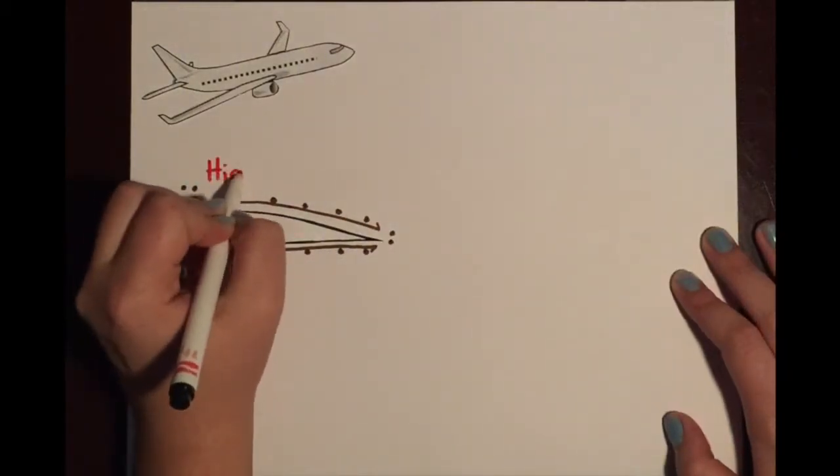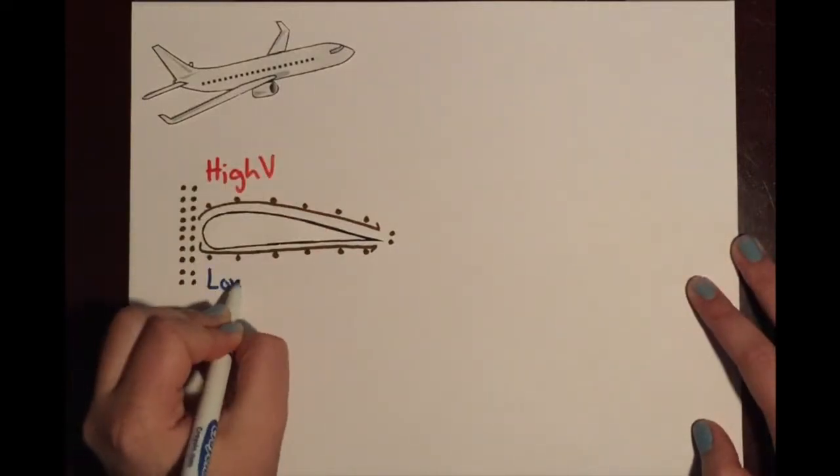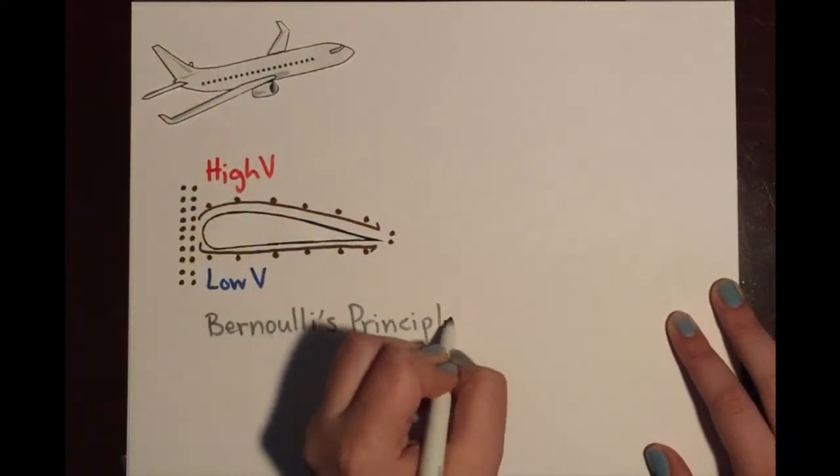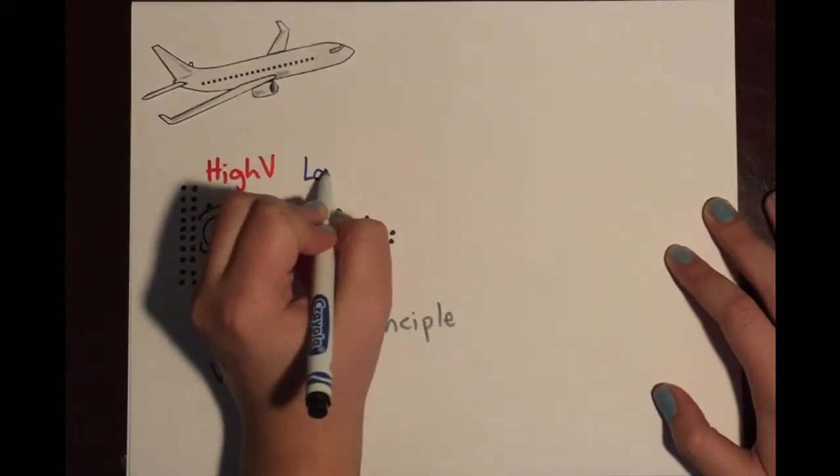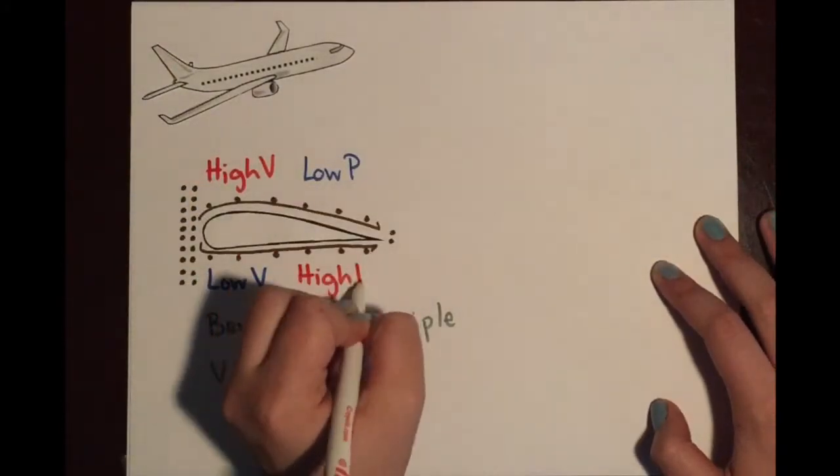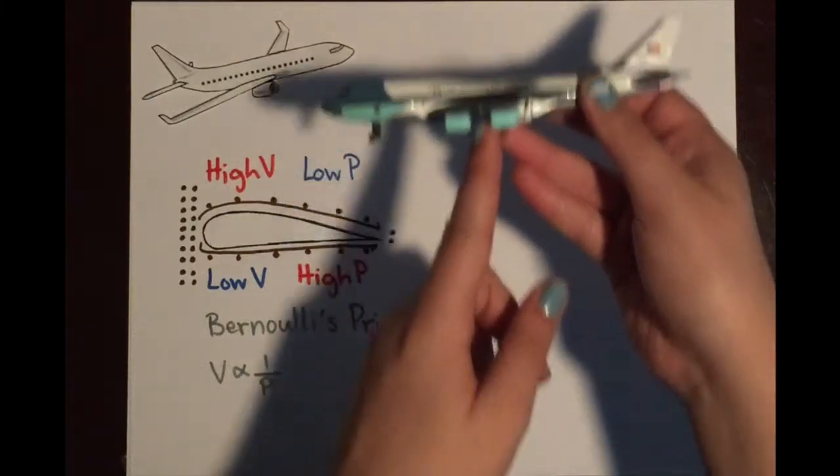Therefore, there is a high velocity on the top and a low velocity on the bottom. Through Bernoulli's principle, we know that velocity is proportional to the inverse of pressure. Therefore, there is a low pressure on the top and a high pressure on the bottom. This pressure pushes up on the wing, causing lift.